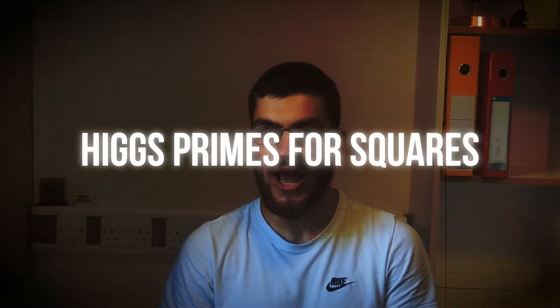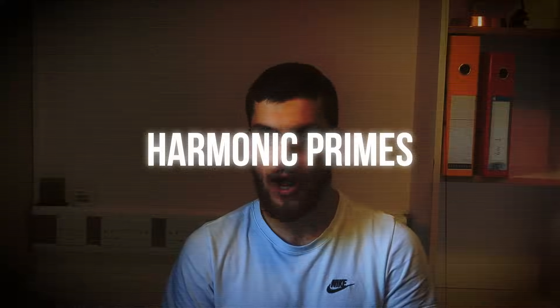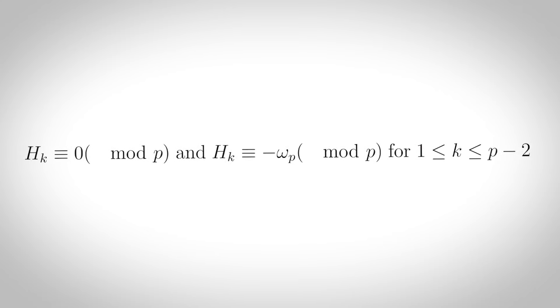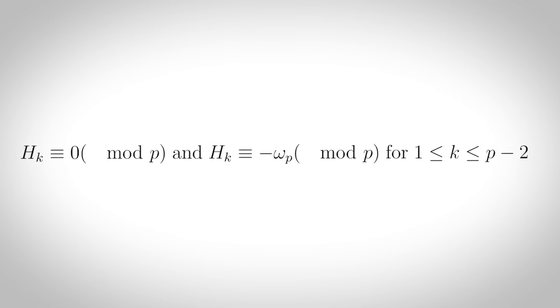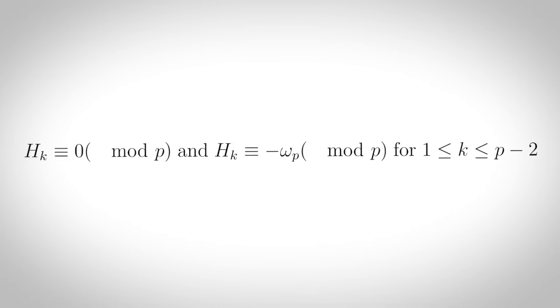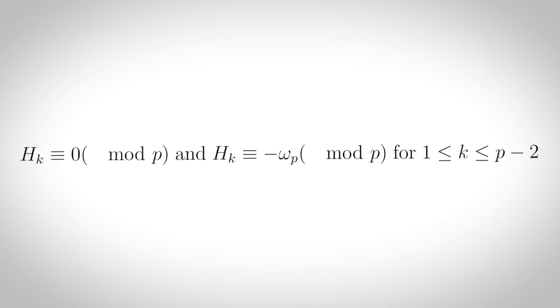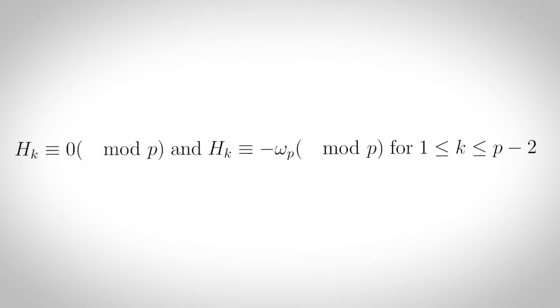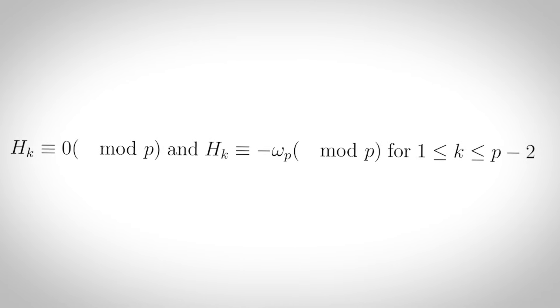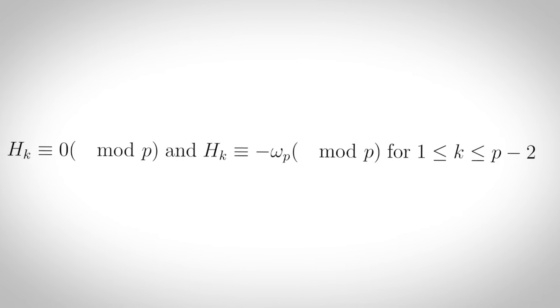Higgs primes for squares: primes p for which p minus 1 divides the square of the product of all earlier terms. Harmonic primes: primes p for which there are no solutions where h sub k is congruent to 0 mod p and h sub k is congruent to minus omega sub p mod p, for 1 ≤ k ≤ p minus 2, where h sub k denotes the kth harmonic number and omega sub p denotes the Wolstenholme quotient.